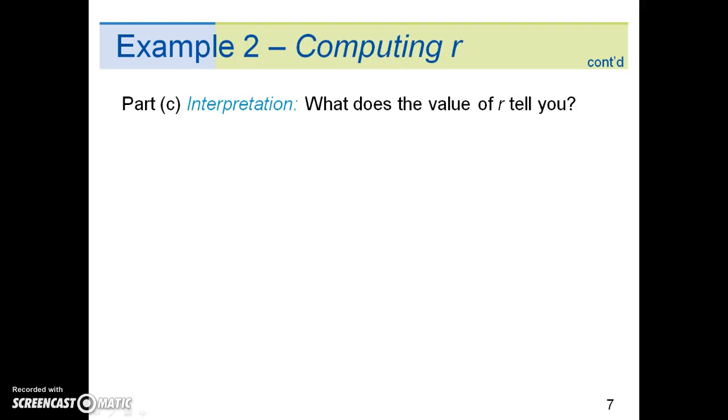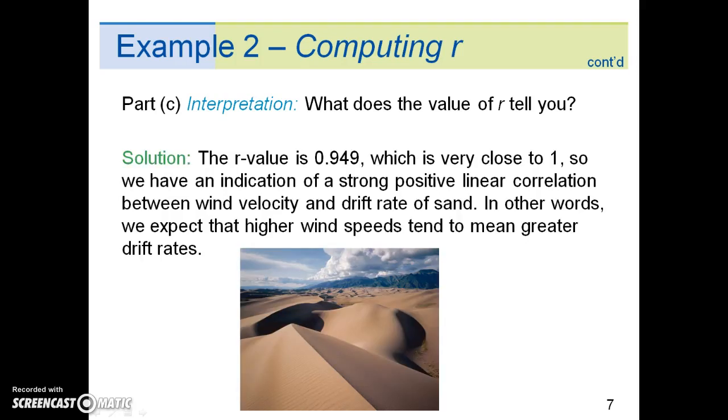Part C asks us to interpret. What does the value of r tell you? The solution is provided here. The r value is 0.949, which is very close to 1. So we have an indication of a strong positive linear correlation between wind velocity and drift rate of sand. In other words, we expect that higher wind speeds tend to mean greater drift rates.